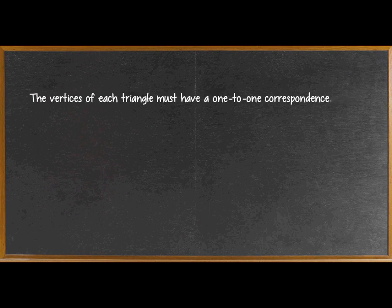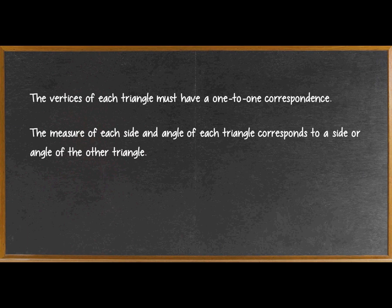To prove that two triangles have the same shape, certain parts of one triangle must coincide with certain parts of the other triangle. To be more specific, the vertices of each triangle must have a one-to-one correspondence. This means that the measure of each side and angle of each triangle corresponds to a side or angle of the other triangle.